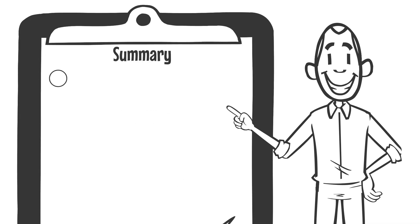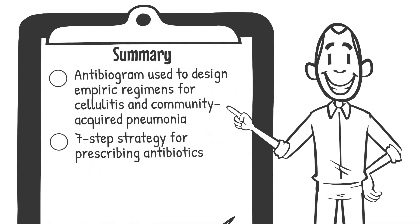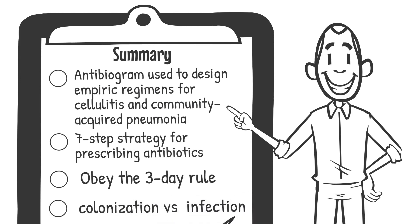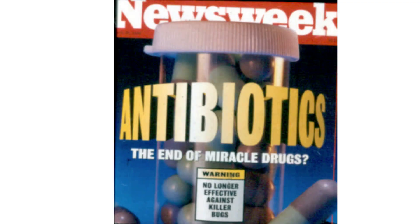Let me summarize the content of this final video. First, we showed how the antibiogram can be used to design an empiric antibiotic regimen for cellulitis and community-acquired pneumonia. Next, we described the seven-step strategy for prescribing antibiotics, emphasizing the importance of obeying the three-day rule and of differentiating colonization from a new infection. By applying what you've learned today, you can help to prevent the development of antibiotic-resistant pathogens, save lives, and prevent the end of the antibiotic era. Thank you.